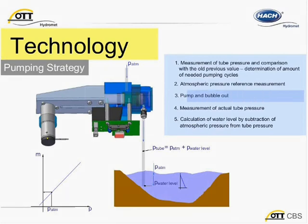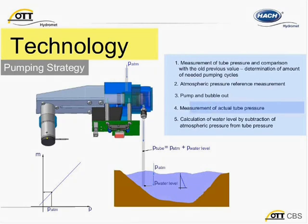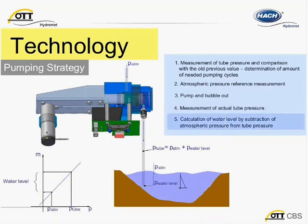Step number two is where we take a look at the atmospheric pressure reference. This performs a simultaneous zero adjustment of the pressure measurement cell, which compensates for temperature influences at the beginning of a measurement. Step three is the pressure measurement. The pump motor generates and pushes compressed air into the tube to create a bubble in pressure, where pressure at the bubble chamber opening is equal to that of the pressure at the pressure measuring cell. This is the pneumatic pressure measurement. It's worth noting that the same pressure cell is used to measure atmospheric pressure and tube pressure, which accounts for the drift correction.